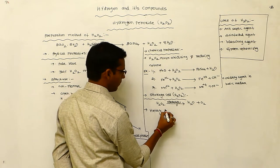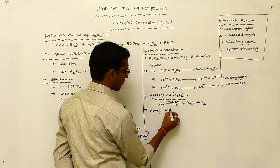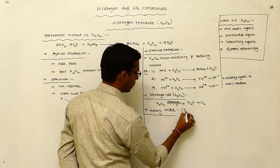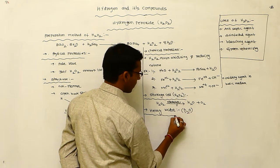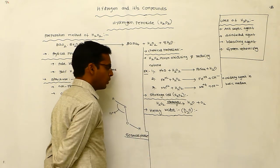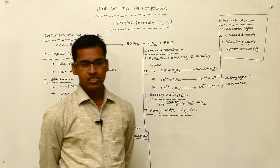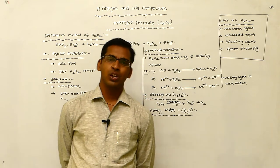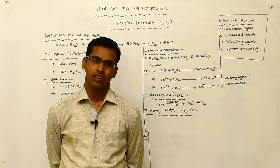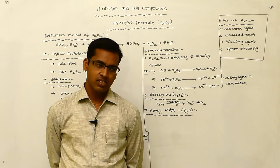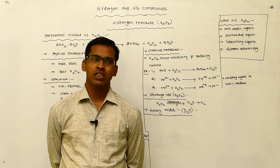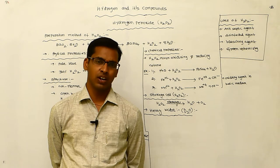The next compound is heavy water. The formula of heavy water is D2O, known as deuterium oxide. It is used in nuclear reactor processes for moderating purposes. Its preparation method is similar to the electrolysis of water.